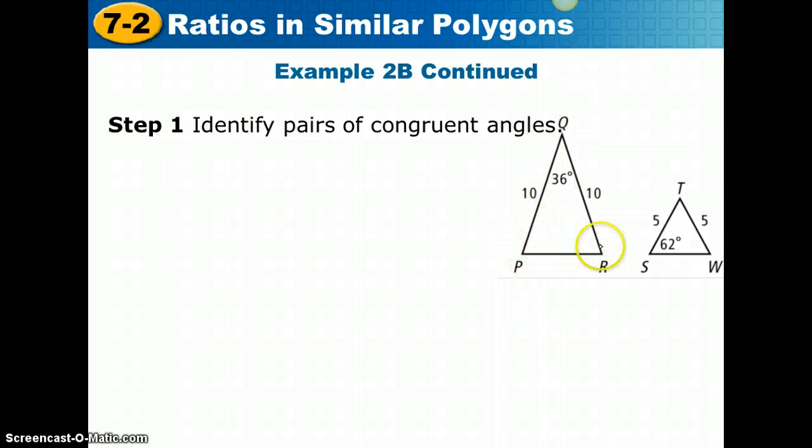You'll notice triangle PQR is an isosceles triangle, and STW is also isosceles because they have congruent legs. We need to find the other measurements.